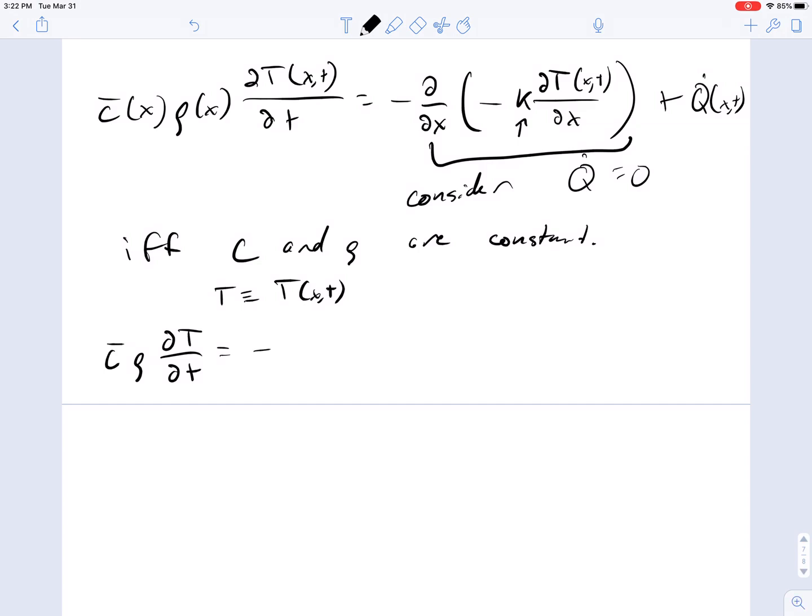For minus this whole term here, we're going to have minus a minus so it becomes a plus, partial by partial x of k times del temperature del x, plus k del squared temperature del x squared.